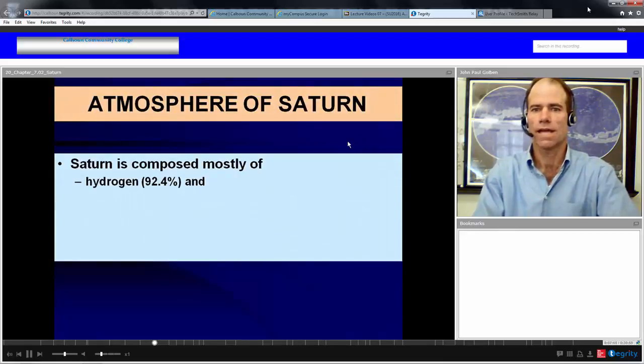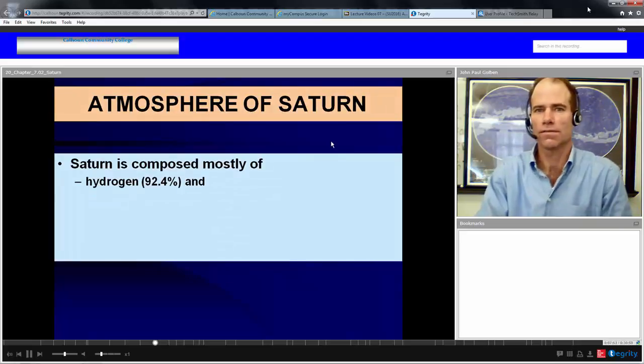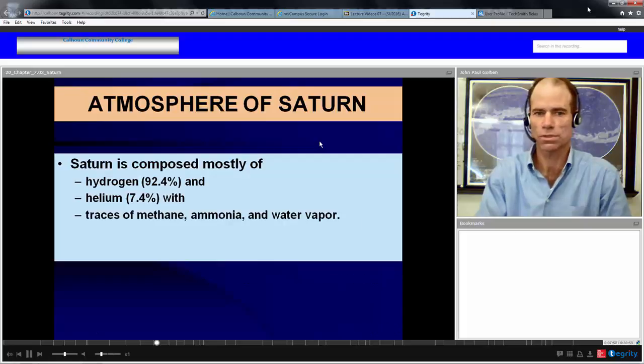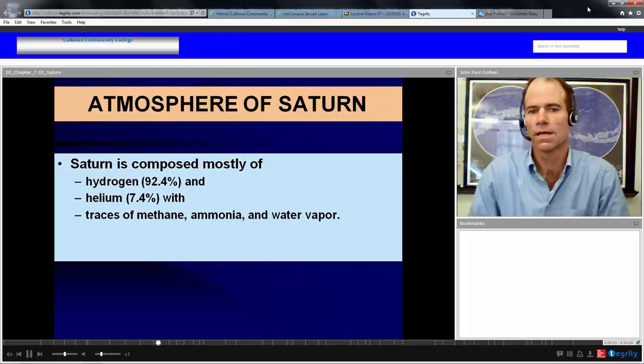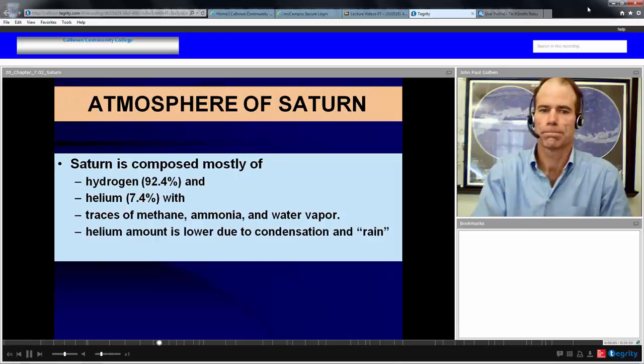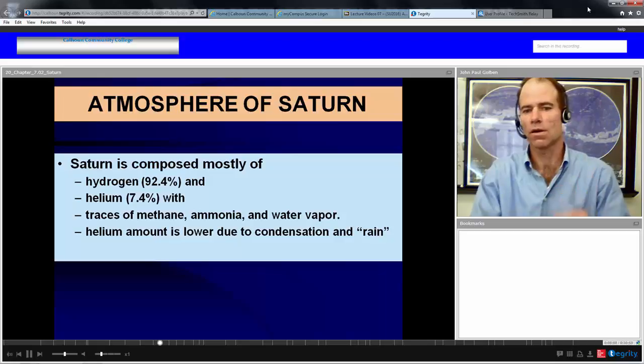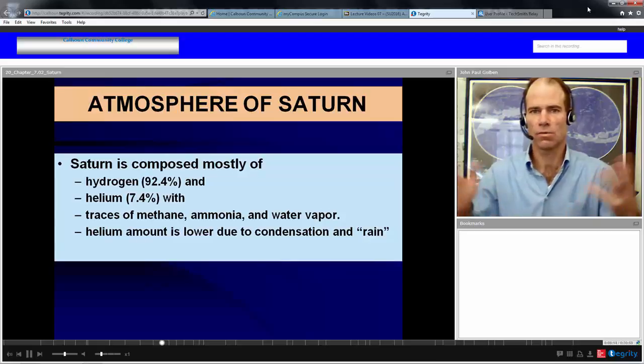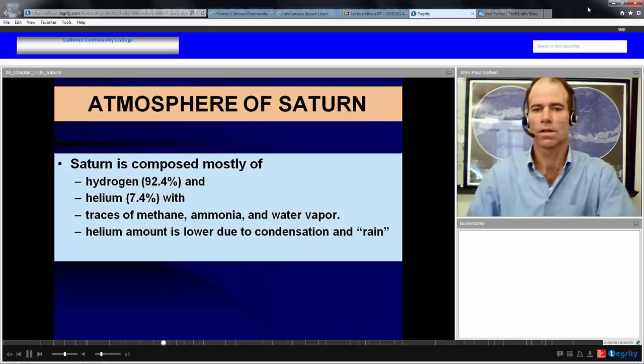Saturn's atmosphere is composed mostly of hydrogen, 92.4%, and helium, 7.4%, with traces of ammonia, methane, and water vapor. The helium amount is lower than Jupiter's because it's believed the helium is condensing and raining coreward towards the planet. So helium is the rain on Saturn.